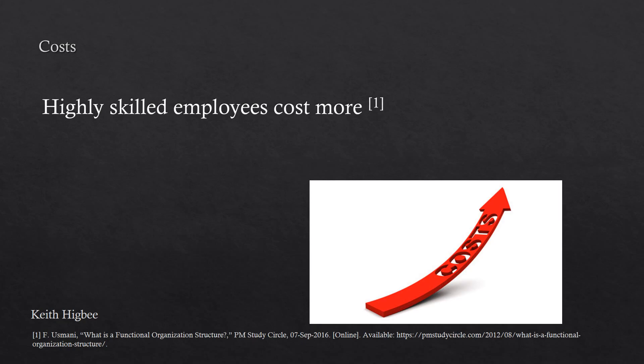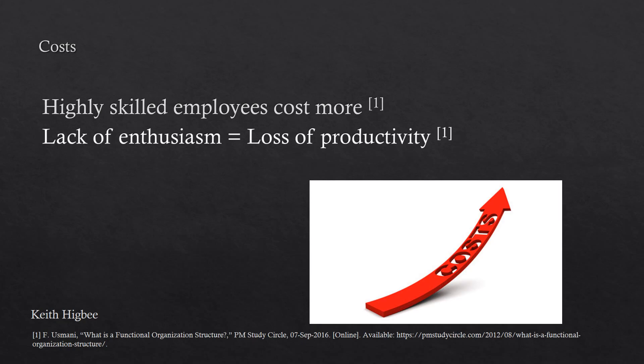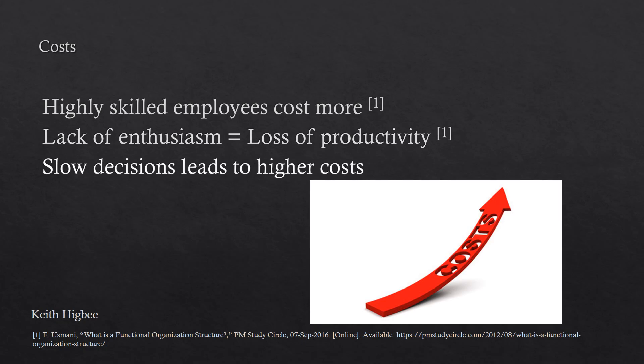The lack of employee enthusiasm and morale can lead to a loss in productivity, which will end up costing the organization as products and services are not being rendered as expected. Finally, the slow decision-making process at the functional manager level can cost the organization — for example, failing to purchase parts while costs are low, only to need them later when they are more expensive.